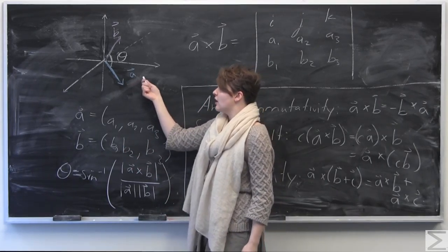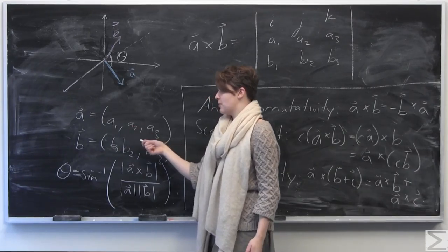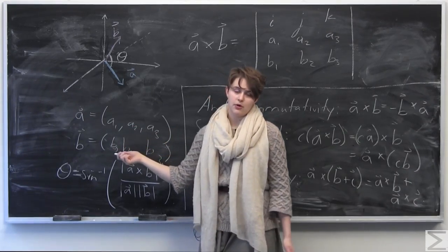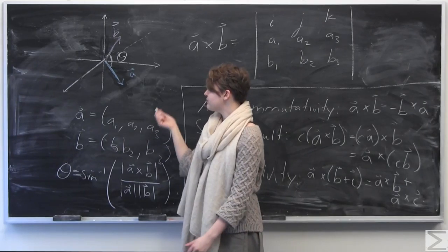So the cross product is very interesting, and it's a very concise way of finding a vector that is orthogonal or normal or perpendicular, all kind of mean the same thing, to the given two vectors.